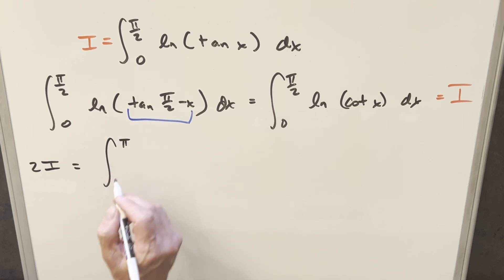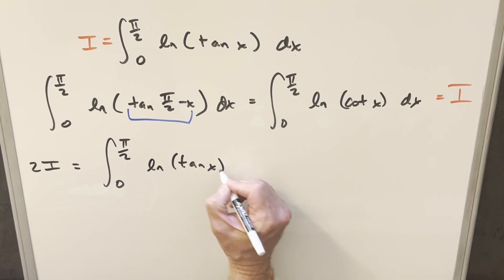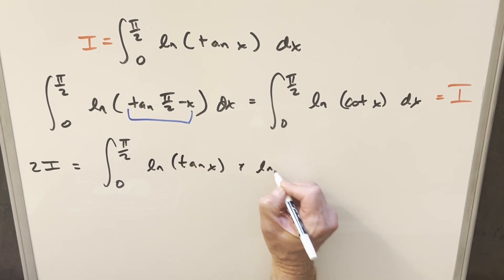And so we can put this together, and we can smash them together under one integral. So we're going to be going from 0 to pi over 2, and now we have natural log tan x plus natural log cotangent x.